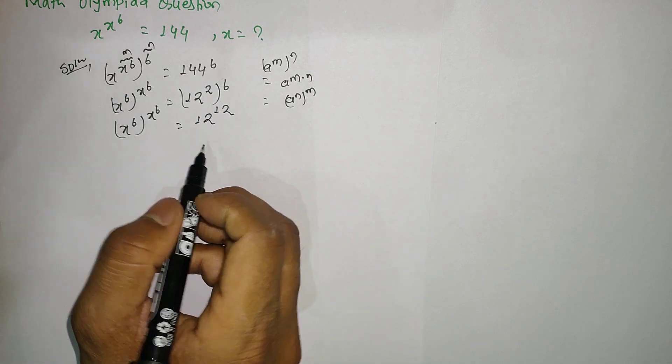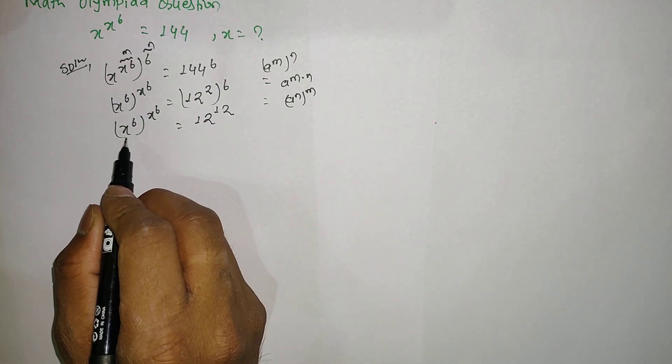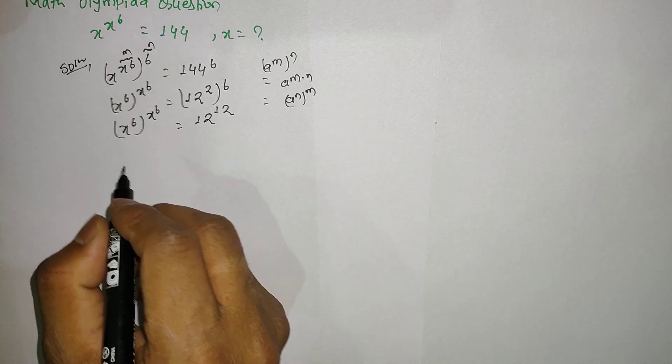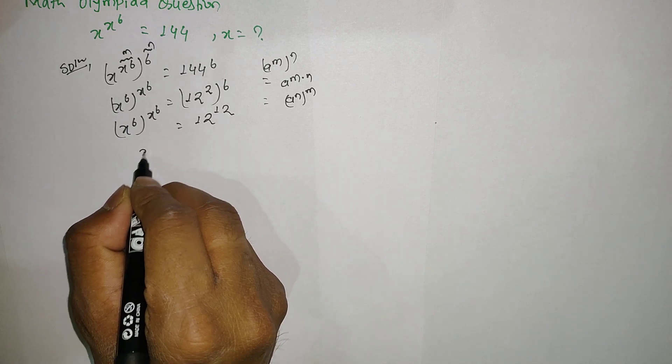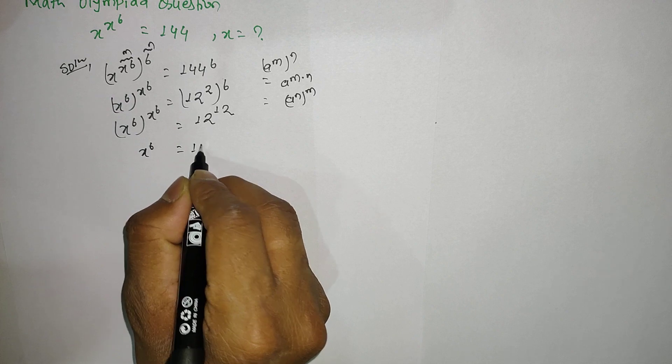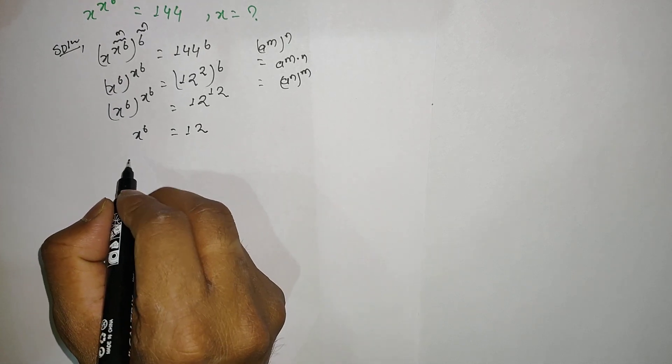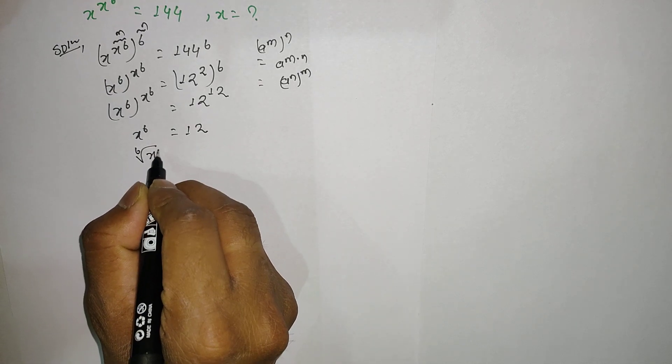Here if you compare the left-hand side and right-hand side, you can see they are in the same form. So we can write x power 6 equals 12, and if you take the 6th root on both sides...